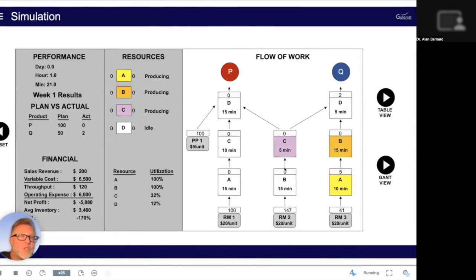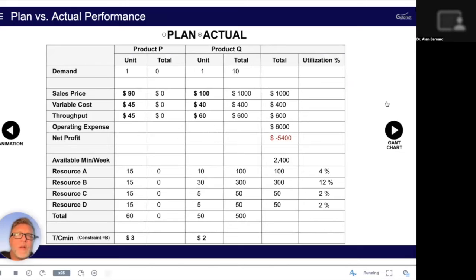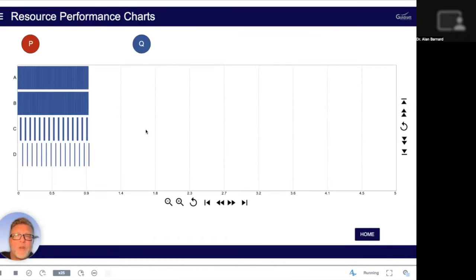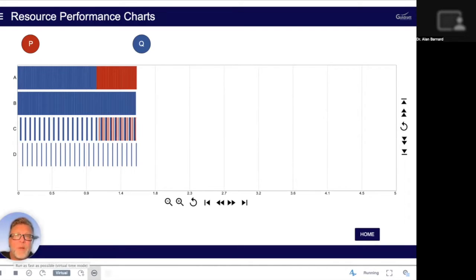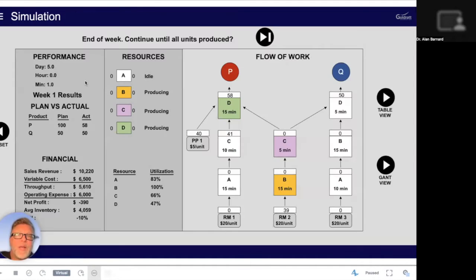If I give priority to Q, so machines are getting activated, trying to produce all of the Q and then it will switch over to the P. I can look at different views here. I can look at my actuals that's happening. I can also look at my Gantt chart and see how that's going. So I'm currently all machines are working on Q. I'm allowing machine C to switch between P and Q to fill up the time there. Else I'm going to be losing a lot of time. Let's run that to the end and see what happened. I ended up producing all 50 Q, but only 58 of P.